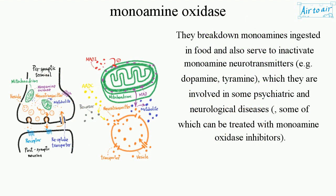They break down monoamines ingested in food and also serve to inactivate monoamine neurotransmitters, e.g. dopamine and tyramine, which means they are involved in some psychiatric and neurological diseases, some of which can be treated with monoamine oxidase inhibitors.